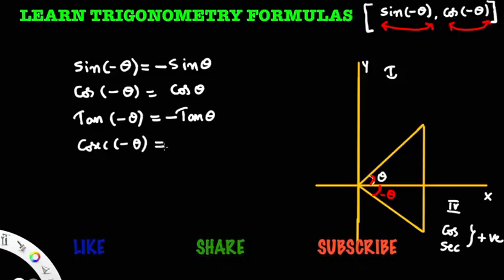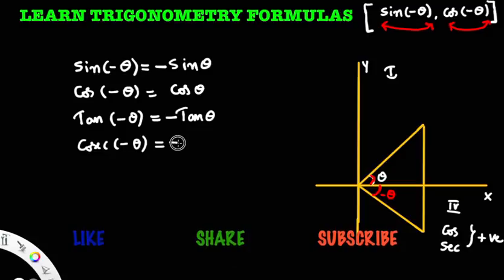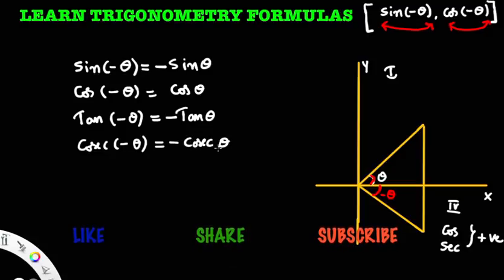Minus theta lies in the fourth quadrant. In the fourth quadrant, cos and secant are positive; remaining all are negative. So cosecant of minus theta is minus cosecant theta.